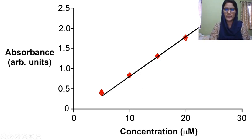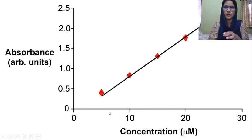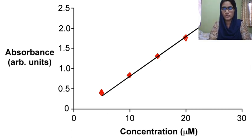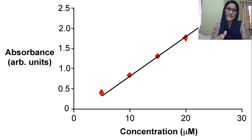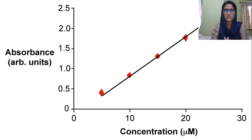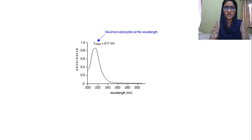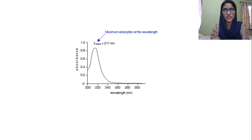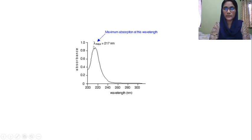We can determine concentration using a calibration graph — a quantitative method. We can find the concentration using this method. Absorbance versus concentration gives a calibration curve. In a qualitative method, we plot absorbance versus wavelength to find the lambda maximum value.